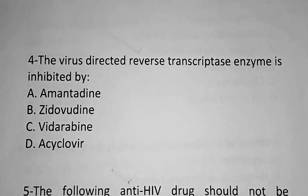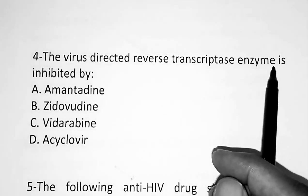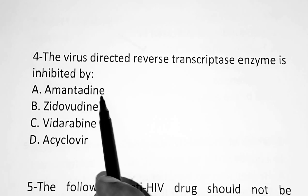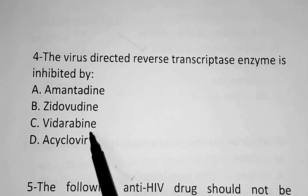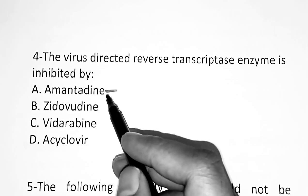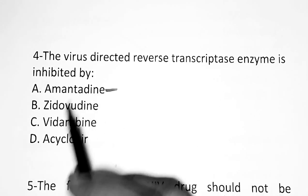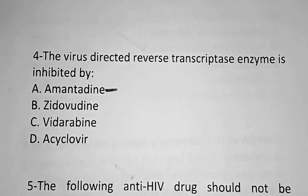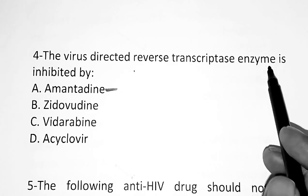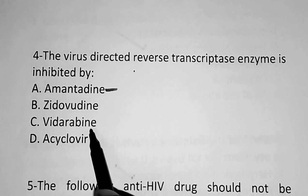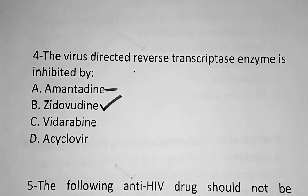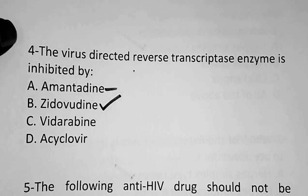Question 4: The virus-directed reverse transcriptase enzyme is inhibited by — Option A: amantadine, Option B: zidovudine, Option C: vidarabine, Option D: acyclovir. Note that amantadine is also useful in Parkinsonism — it is an anti-Parkinsonian drug. However, the correct answer here is Option B, zidovudine, as the anti-HIV drug that inhibits reverse transcriptase.